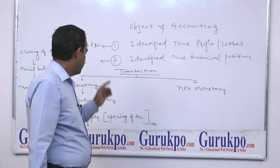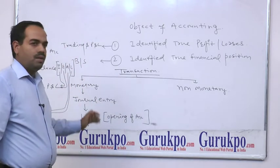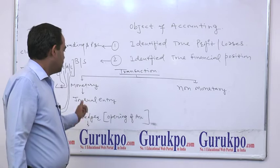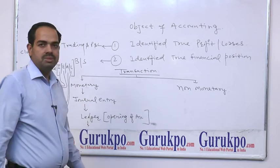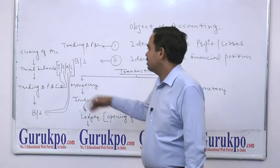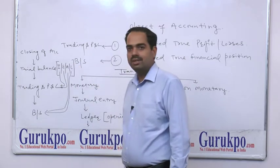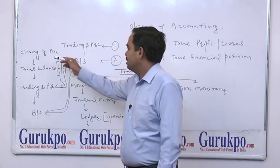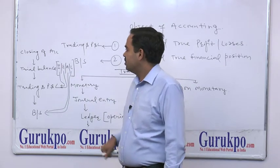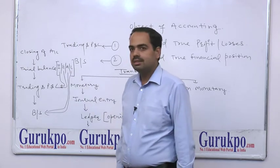The second step of accounting is ledger. After preparing the journal, the trader makes a ledger. Ledger means opening of accounts. The next process of accounting is the closing of accounts. In the closing of accounts, the balance of each account is to be transferred into the trial balance.